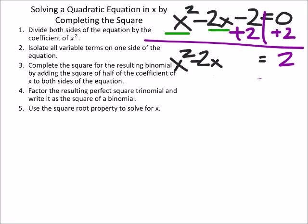Now it says that long sentence, complete the square for the resulting binomial. The binomial here is this x squared minus 2x. By adding, so that hopefully is pretty self-explanatory, we're going to add the square, so we're going to square something, just don't really know what it is yet. Of half of the coefficient of x. So we're going to square half of the coefficient of x. The coefficient of x right now is this negative two. So I'm going to take that negative two. It says we're going to take half of that. So I'm going to divide that by two.